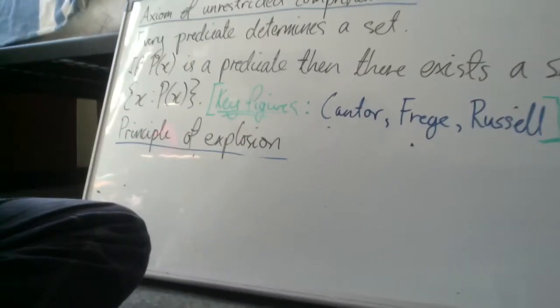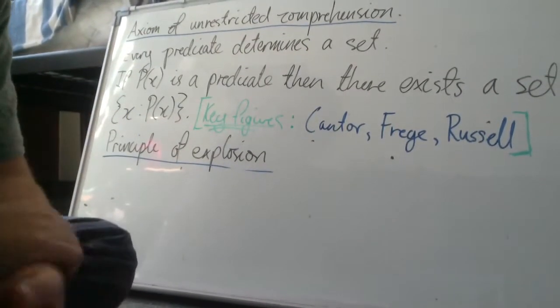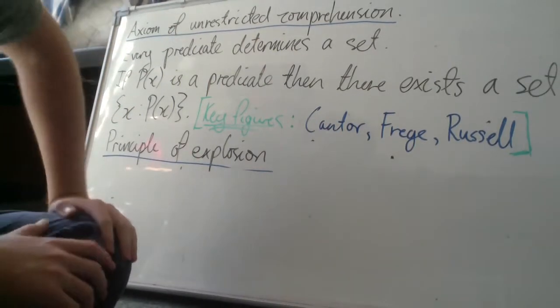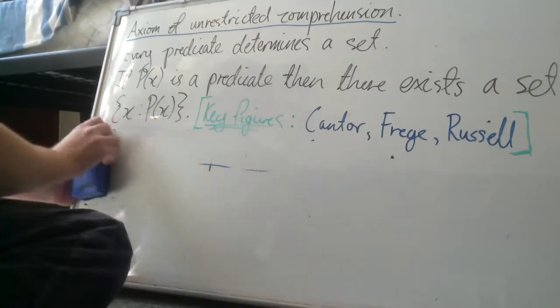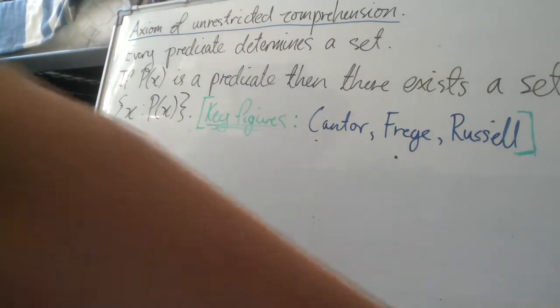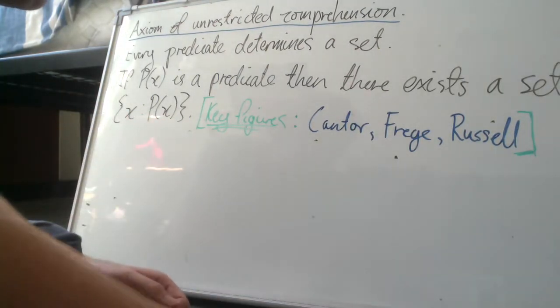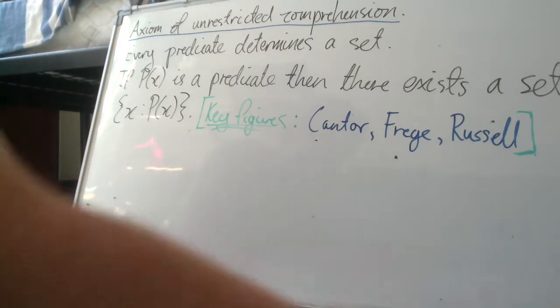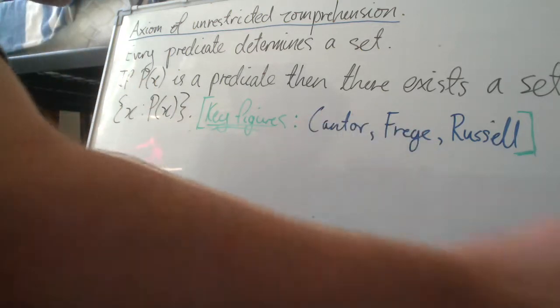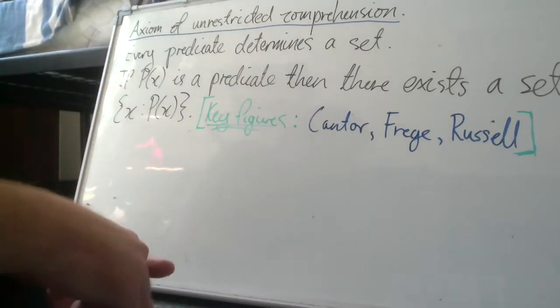Now that we know that, let's show that the axiom of unrestricted comprehension is incoherent. So this is quite simple, it's quite simple to show symbolically, but sort of understanding what is going on is a bit more difficult.